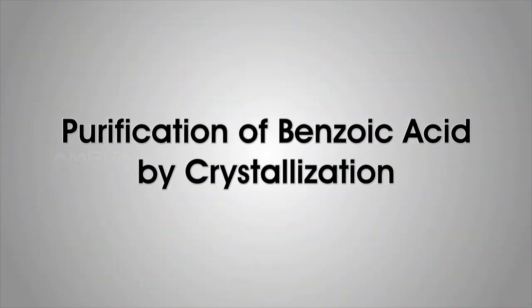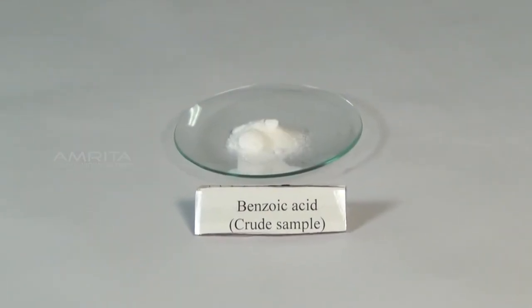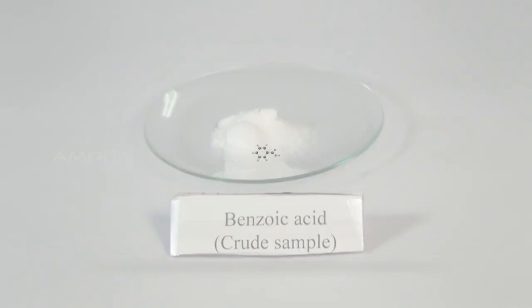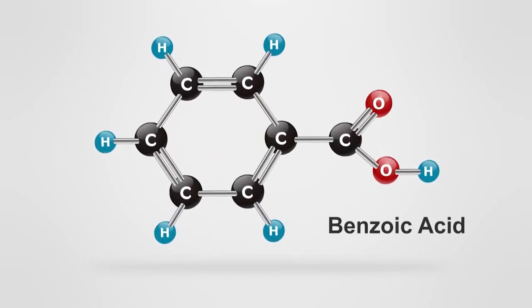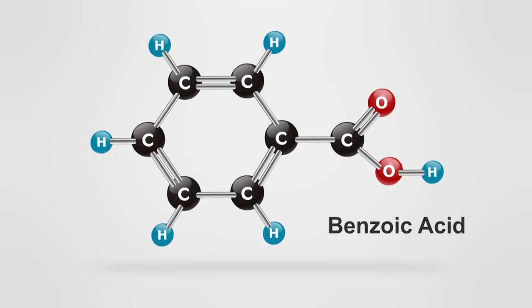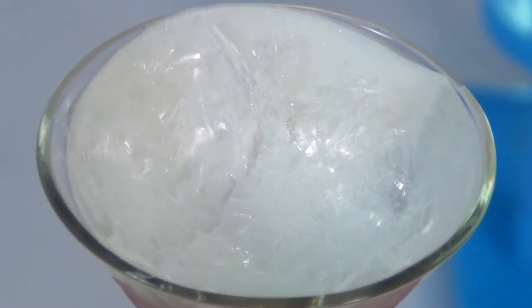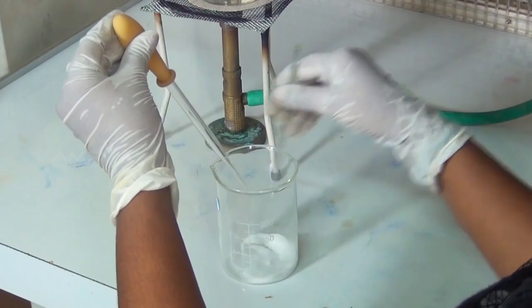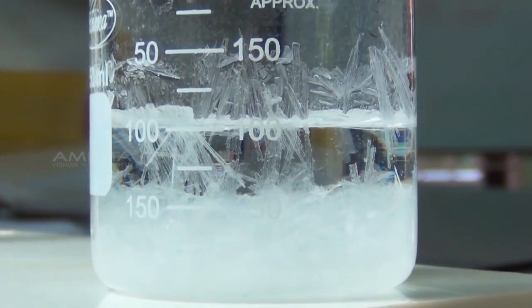Purification of Benzoic Acid by Crystallization. Benzoic acid is a colourless crystalline solid and an aromatic carboxylic acid. Pure crystals of benzoic acid can be prepared from an impure sample by the process called crystallization.